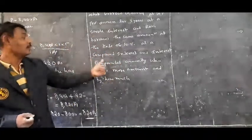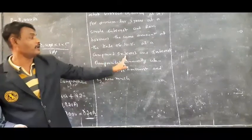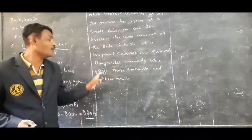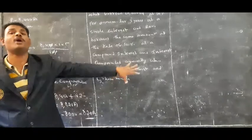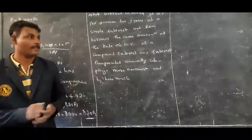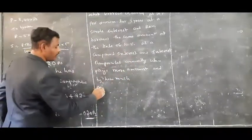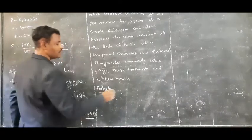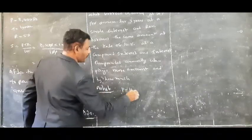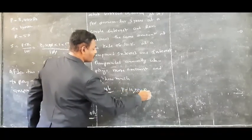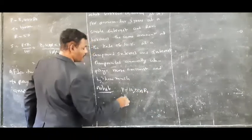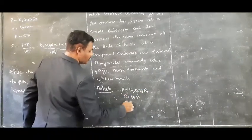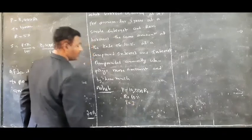Now we have to find who pays more and by how much. First, taking Ashok's amount. What is the principal amount of Ashok? P is equal to 10,000 rupees. Rate of interest is 10%, and time duration is 3 years.